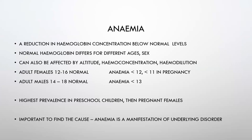In someone with diarrhea and dehydration, hemoglobin may look higher than it actually is. In broad terms, normal is 12–16 for adult females and 14–18 for adult males. Anemia is defined as less than 12 in females and less than 13 in males. The highest prevalence is in preschool children, then pregnant females, then females generally, and lastly males. Importantly, anemia is purely a manifestation of something else — we must find the underlying cause.